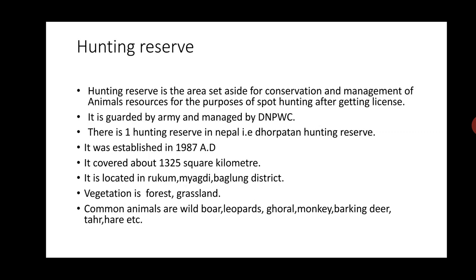Hunting reserve is the area set aside for conservation and management of animal resources for the purpose of sport hunting after getting a license. It is guided by army and managed by DNPWC. There is one hunting reserve in Nepal: Dhorpatan Hunting Reserve. It was established in 1987 AD. It covers about 1,325 square kilometers. It is located in Rukum, Bagdi, and Baglung districts. Vegetation is forest and grassland.